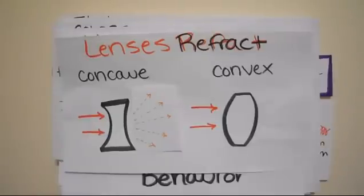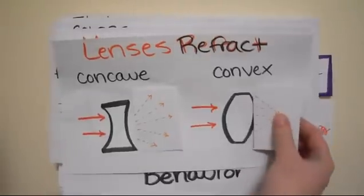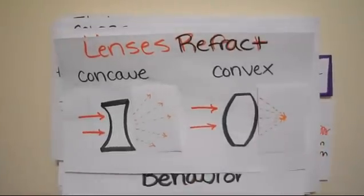Similarly, a convex lens moves light waves in the opposite way a convex mirror would. It causes the rays to bend inward to a focal point.